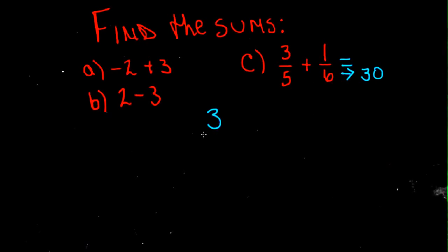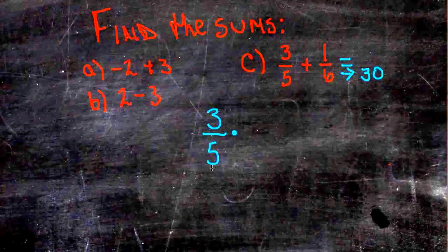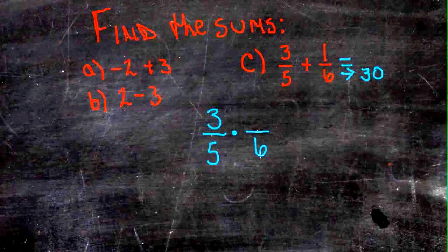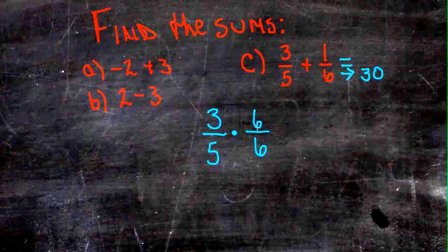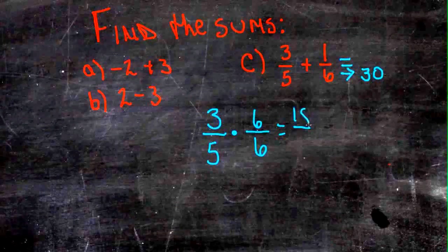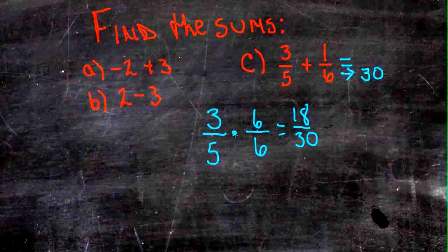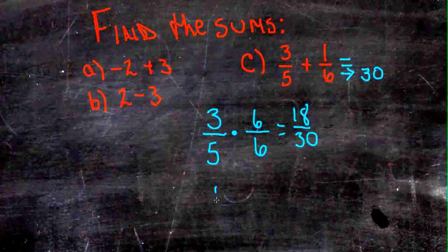So if our first one is 3 fifths, we have to multiply 5 by 6 to get 30. And we have to multiply 3 by 6, so that we don't change the value of the fraction, and that gives us 18. So 3 fifths is the same thing as 18 thirtieths.